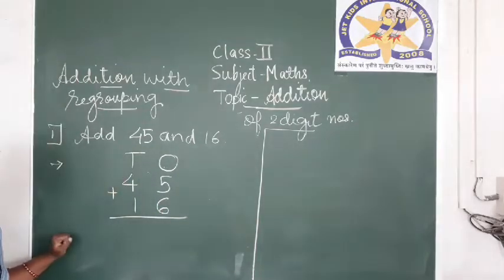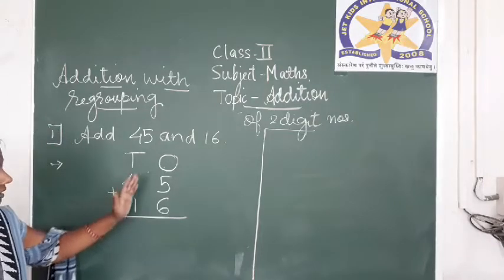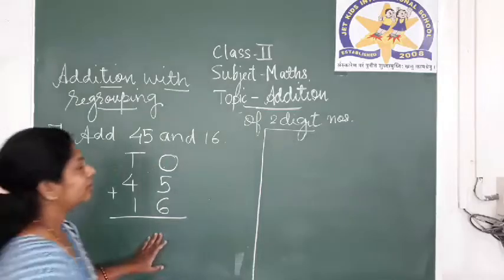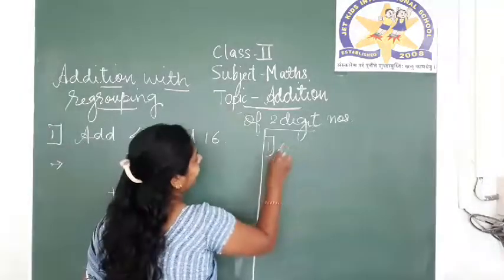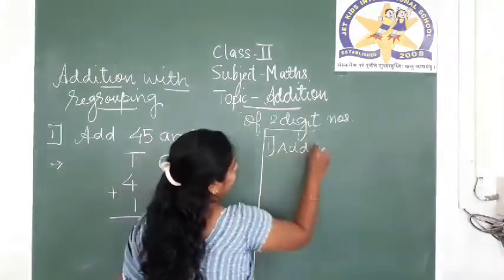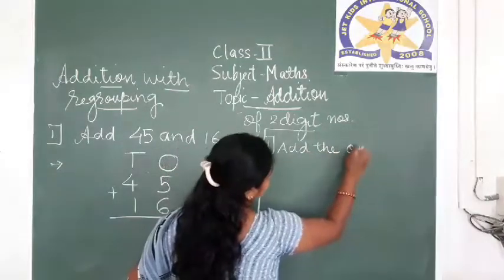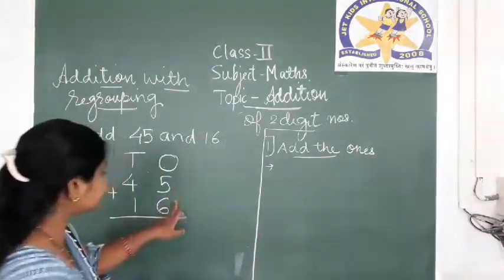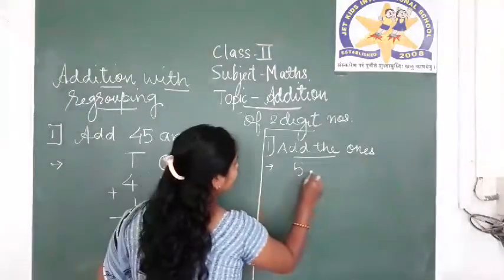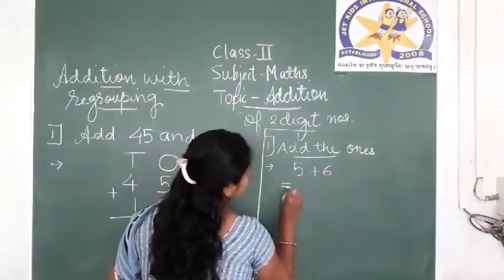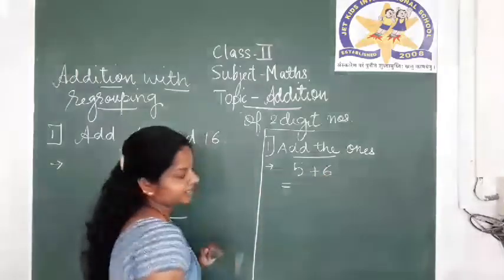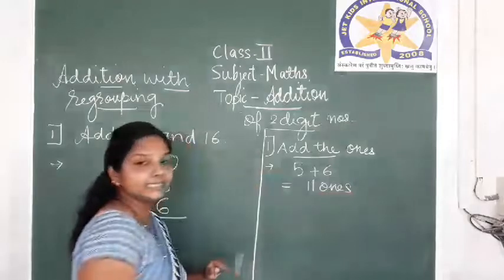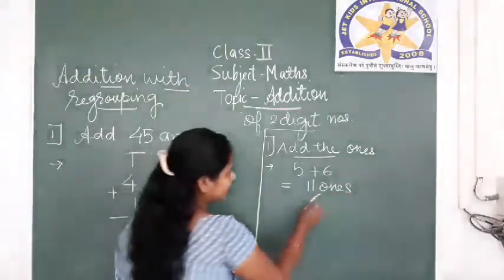Next step is to add the ones first. What are the ones? 5 ones plus 6, that is 5 plus 6. 5 plus 6 is 11 ones. This 11 ones, we are going to regroup.